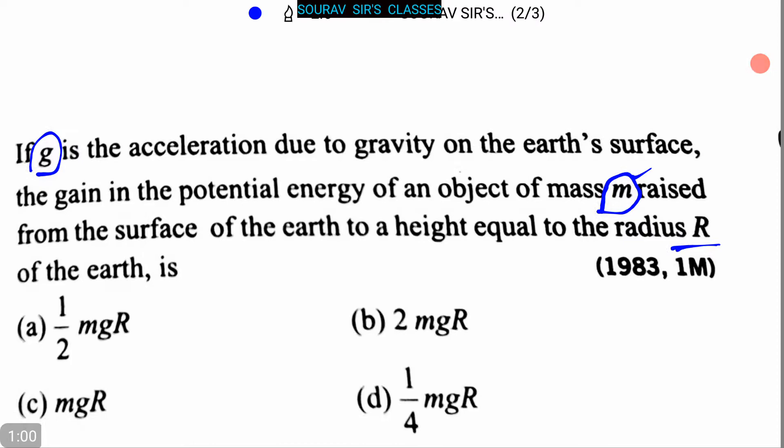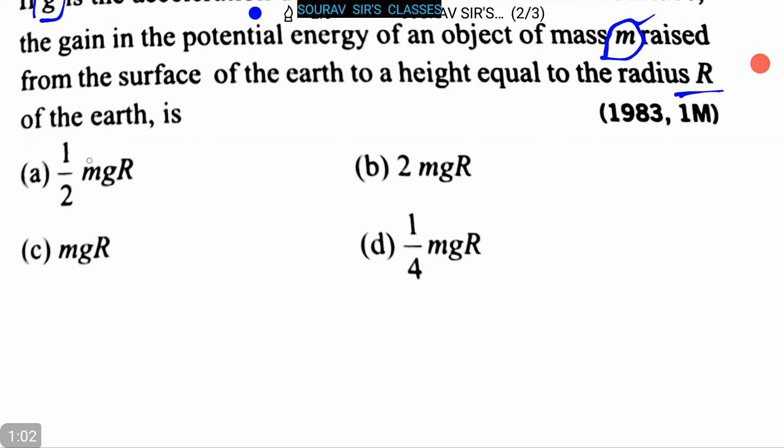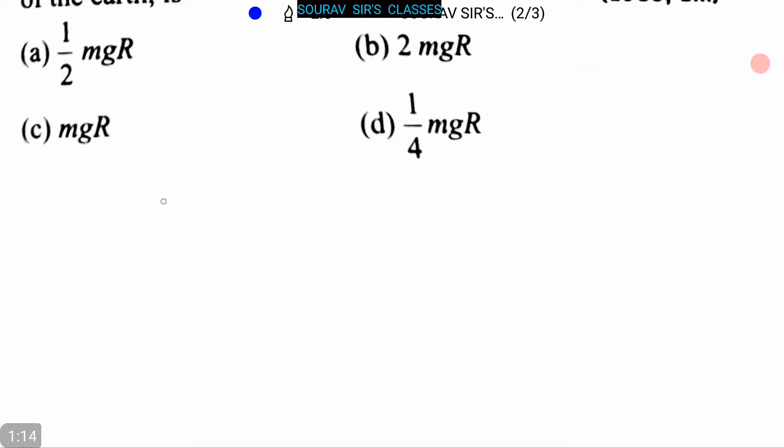Four options are given: option a is 1/2 mgR, option b is 2mgR, option c is mgR, and option d is 1/4 mgR. So now let's proceed to the answer.